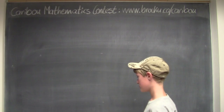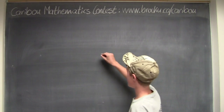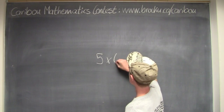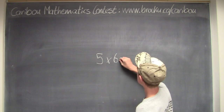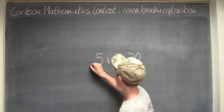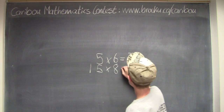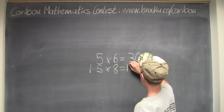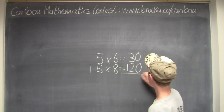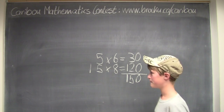Just to make sure: 5 ants times 6 legs equals 30 legs, and 15 spiders times 8 legs equals 120 legs. Adding it all up gives us 150 legs, which is what we want.